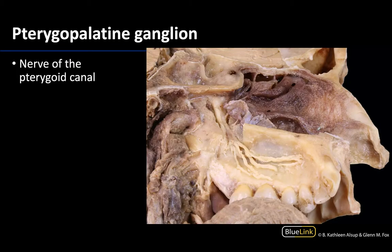One of my all-time favorites is the pterygopalatine ganglion, which is located in this general region right here — you can see where it gets a little bit larger and more circular. This is the largest peripheral parasympathetic ganglion, and it's located medial and inferior to the bulk of V2. Because of its close relationship to V2, many branches of the maxillary nerve will travel through this ganglion without synapsing.